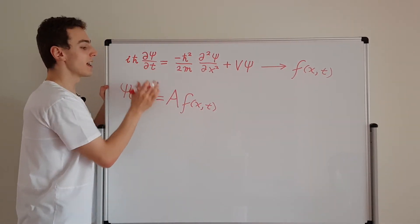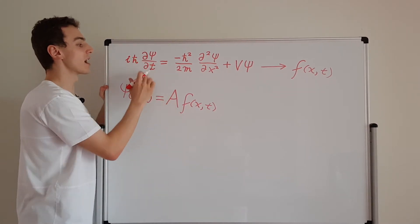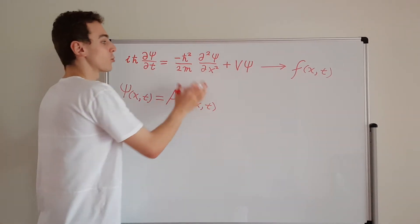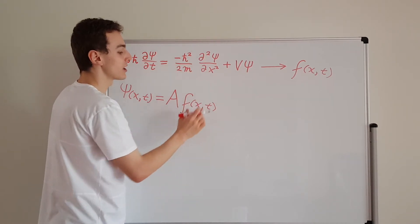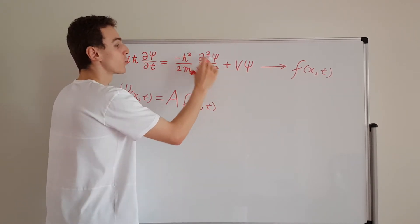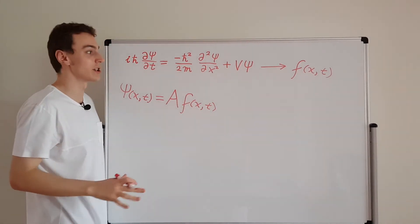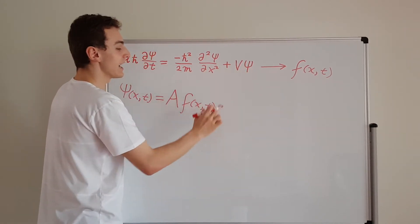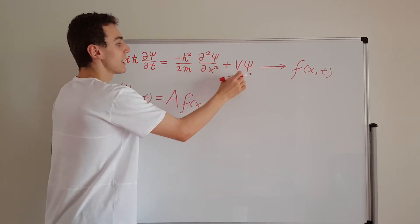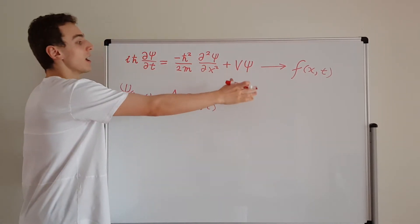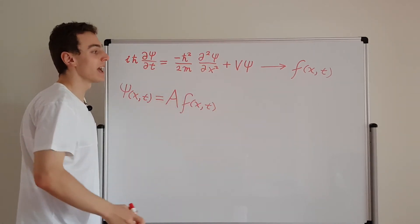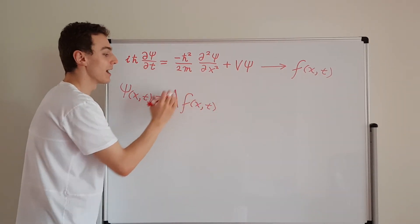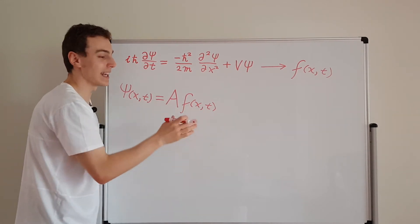If we substitute a times f into the left-hand side, the time derivative doesn't care about this constant, so we can factor it out. On the right-hand side, the kinetic energy term doesn't care about the constant either, because the partial derivatives are with respect to position and the constant doesn't depend on position, so we can factor a out the front. We can then factor a out of each term on both sides and cancel it. Because f of x and t satisfies the Schrodinger equation, any multiple of f of x and t must satisfy it as well.